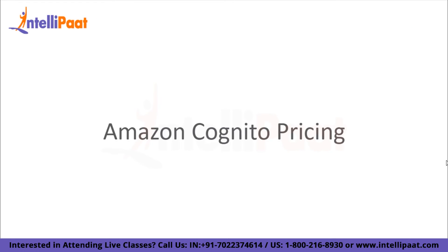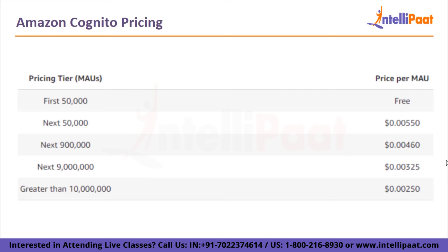Let's now move on to our last agenda: Amazon Cognito pricing. The pricing of Amazon Cognito follows the pay-as-you-go concept, just like many other AWS services, and no minimum charges are levied. If you use Amazon Cognito to create a user pool, you only pay for monthly active users (MAUs). A user is considered an MAU if an identity operation involving that user occurs within a calendar month, such as sign-up, sign-in, token refresh, or password change. You are not charged for additional sessions or inactive users during that calendar month.